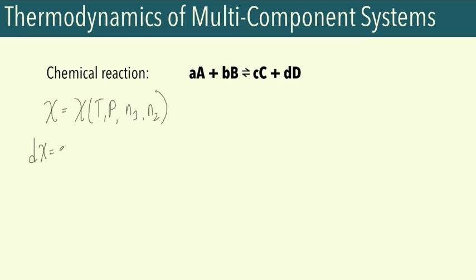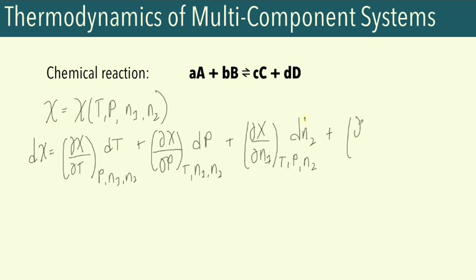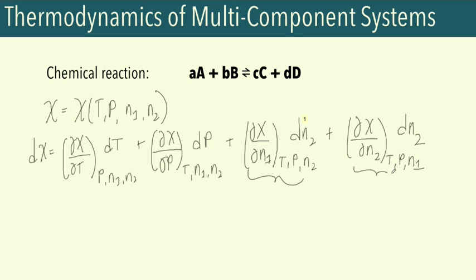The total differential is: dX equals the partial of X with respect to T at constant pressure and number of moles times dT, plus the partial of X with respect to P at constant temperature times dP, plus the partial of X with respect to the number of moles of component 1 at constant T, P, and n2 times dn1, plus the partial of X with respect to n2 at constant T, P, and n1 times dn2. When dealing with multi-component systems, we have to consider these particular partial derivatives, which tell us the dependence of the extensive property on the molar composition.